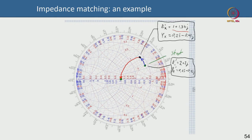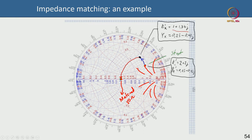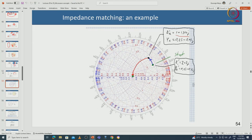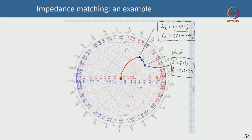That means my load is here and I need to reach the match point, which is 50 ohm — basically the center of the Smith chart. I cannot arbitrarily move; I can only move along these circles. I told you that you desirably do not move along resistive lines because those lead to losses. So you try to avoid those resistive lines and instead move along capacitive or inductive circles.